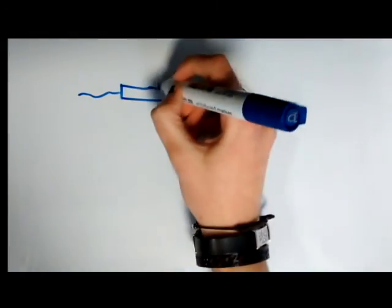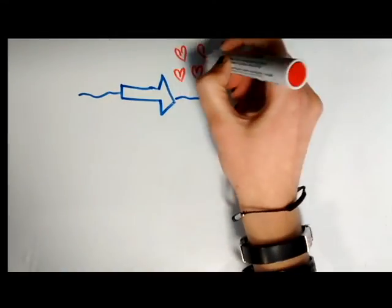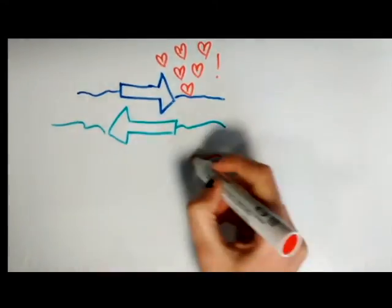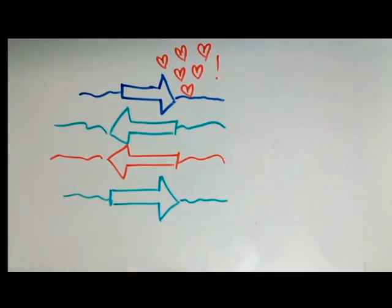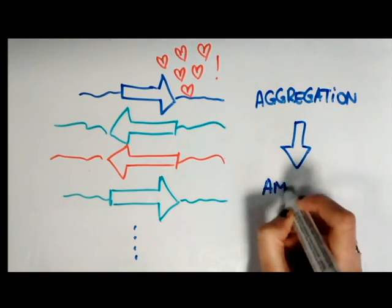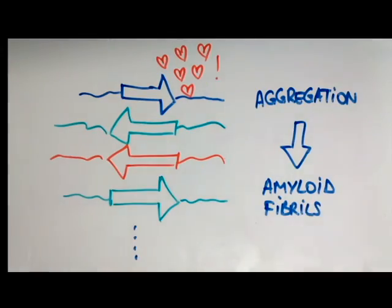But it's not all rosy in the world of hippie beta strands. Sometimes, strands can develop a kind of love addiction that will make them interact with more and more partners from different proteins without being able to control themselves. As a result, all the protein victims will lose their normal function and aggregate, leading to the formation of a large aggregate called amyloid fibrils.